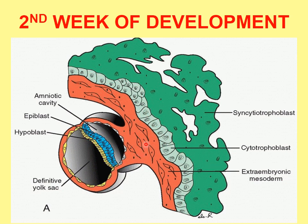In the second week of development, you have the bilaminar germ disc which includes the epiblast and hypoblast, with formation of two cavities. The cavity above the epiblast is the amniotic cavity, lined by amnioblast cells. The cavity below the hypoblast is the yolk sac. The whole structure lying outside the embryo is the extra-embryonic mesoderm, and this is the area of the connecting stalk.